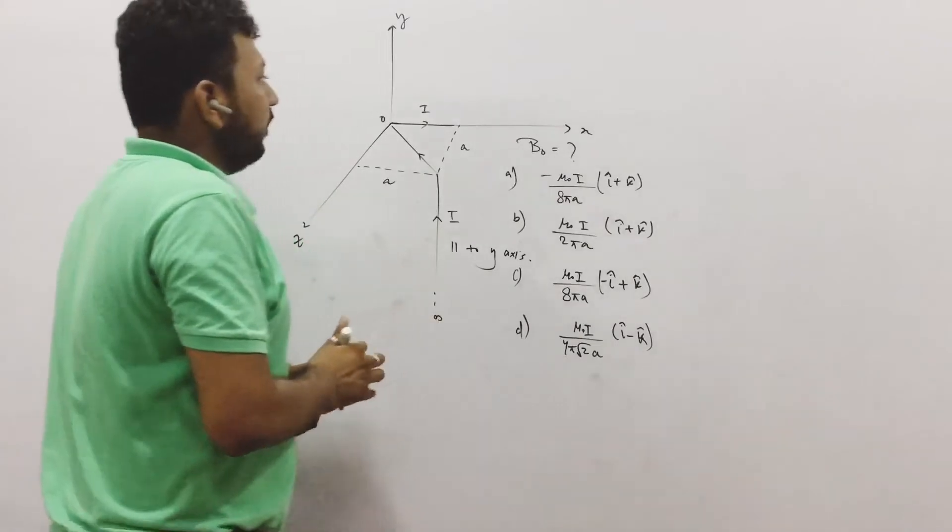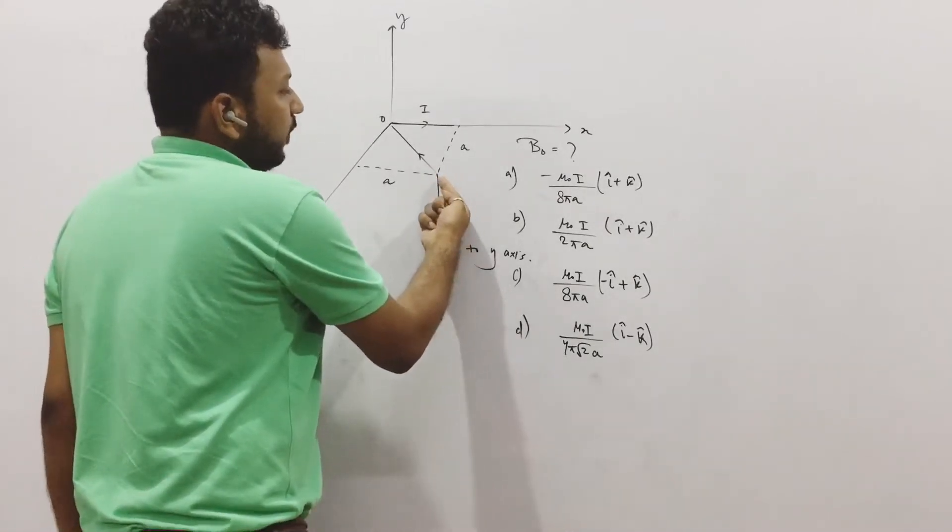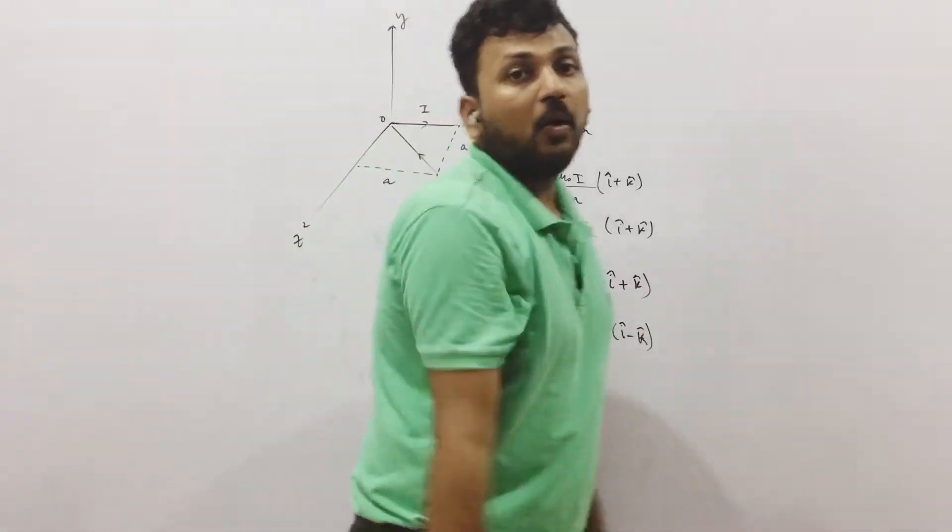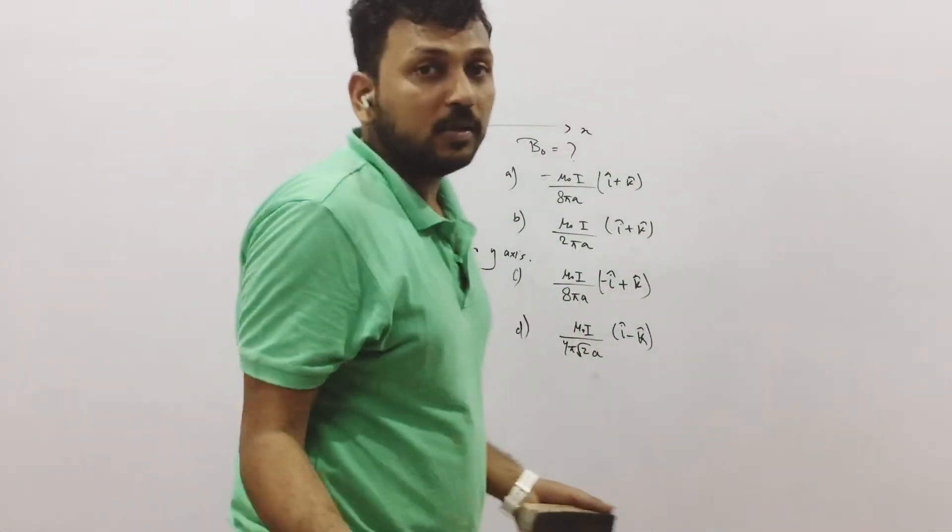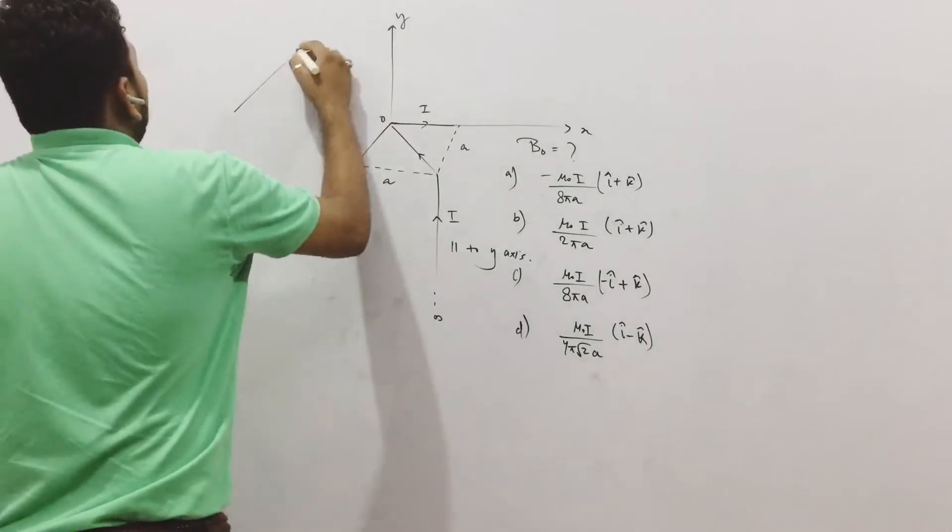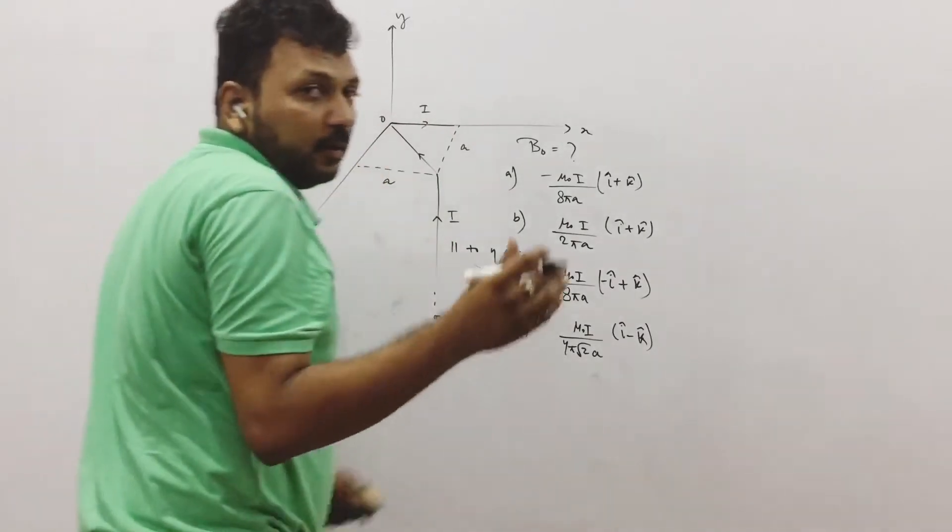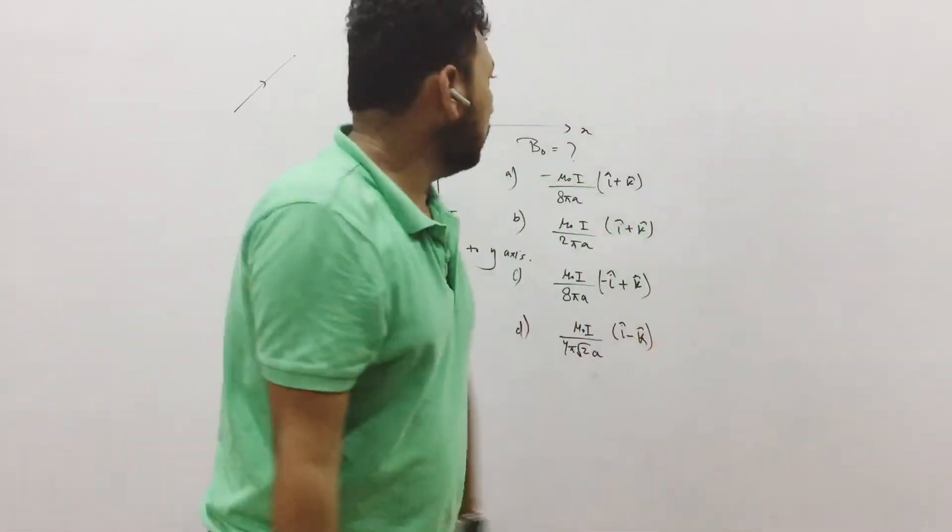So very simply, we can say magnetic field due to this current and this current at origin will be zero because it is in the direction of origin. So magnetic field due to any current in the direction of that point is zero, right?